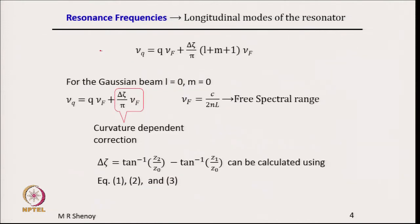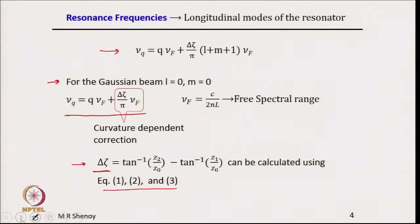For the Gaussian beam with l=0, m=0, the resonance frequency is given by that expression where the second term is the curvature-dependent correction, and delta_zeta = tan⁻¹(z2/z_naught) − tan⁻¹(z1/z_naught). Using equations 1, 2, and 3 from the earlier slide, we can determine positions z1, z2, and z_naught to exactly determine the magnitude of delta_zeta. That is what we will do in this lecture.